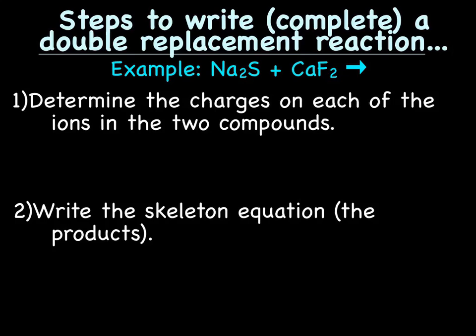Let's go over the steps to write or complete a double replacement reaction. And the example we'll be using as we're doing this is Na2S, or sodium sulfide, plus CaF2, or calcium fluoride. So, step one is to determine the charges on each of the ions in the two compounds. So, let me rewrite this. We have Na2S plus CaF2. So, sodium is a cation with a 1 plus charge. Sulfur is an anion with a 2 minus charge. Calcium, cation with a 2 plus charge. And fluorine is an anion with a 1 minus charge. So, step one, complete.